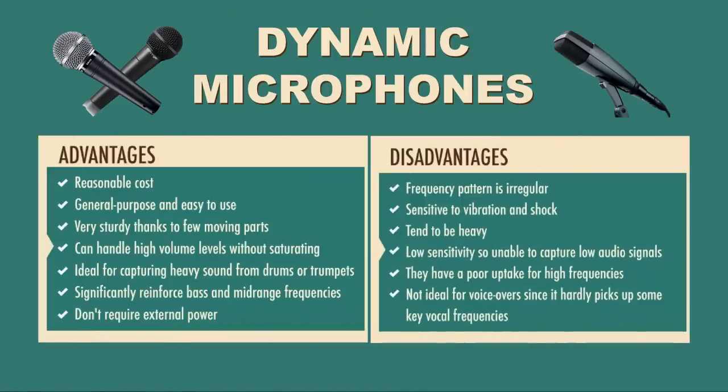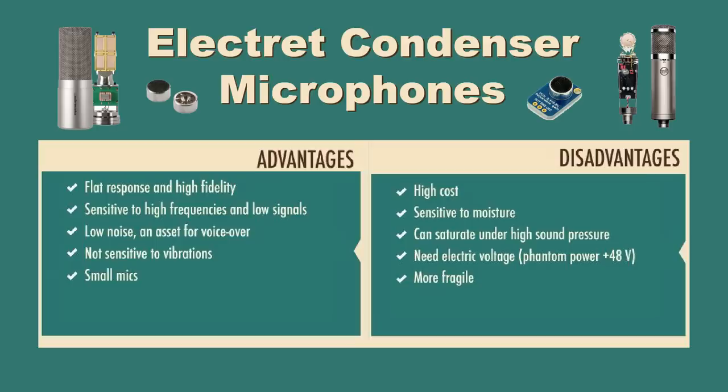Dynamic microphones are more physically robust, can handle high volumes better, and don't require external power, so they're good for uses like public events and rock concerts. Condenser mics are fragile and require an external voltage to work, but they are more sensitive while picking up less noise, and are smaller, so they are excellent for studio and video recording. Now that we've covered speakers and microphones, for the first time ever, I'm giving you homework. I want you to go and find out what phantom power is and why it's sometimes needed with microphones. Post your answers on the Element 14 community at element14.com/the-learning-circuit.